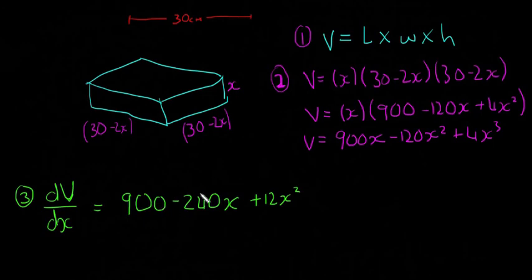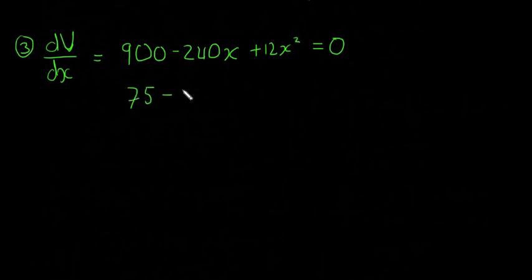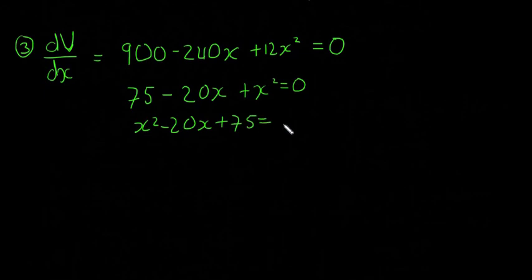Okay, and again, when we want to find the maximum or the minimum, we're going to let this equal to zero because we're looking for the turning points. So let's go down a little bit. 900 minus 240X plus 12X squared is equal to zero. I'm going to try and divide everything here by 12. And that'll give me 75 minus 20X plus X squared is equal to zero. I'm just going to rewrite that. X squared minus 20X plus 75 is equal to zero.